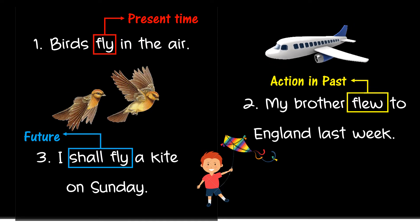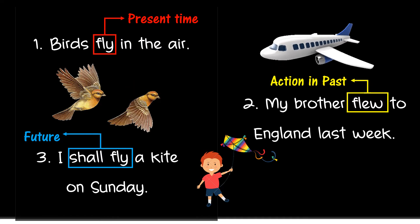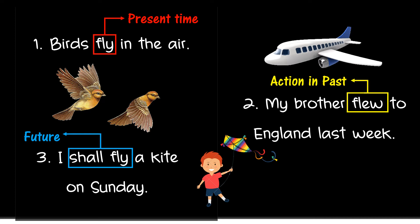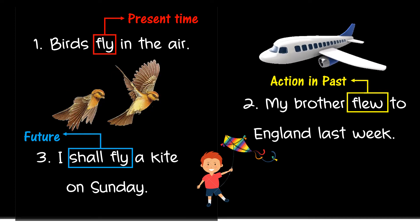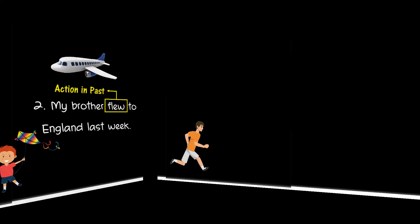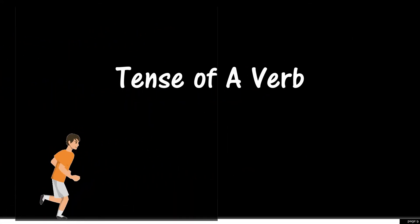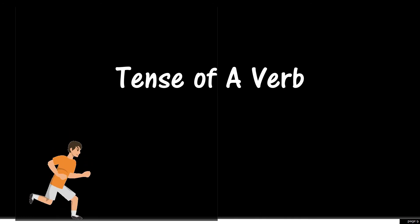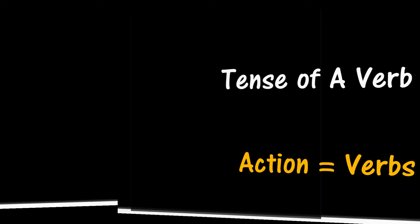Thus, the tense of a verb does not show only the time of an action or event alone, but also shows the state of that action. The tense of a verb shows the time when an action takes place. The actions are called verbs.